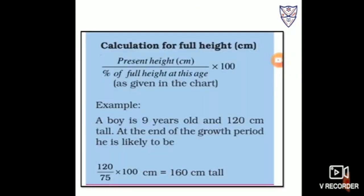Let us solve a sum using this formula. A boy is 9 years old and 120 centimeters tall. At the end of the growth period, what will be his height at age 18? Present height is 120 cm. From the table, at age 9, boys have reached 75% of their height. So: 120 divided by 75, multiplied by 100 equals 160 centimeters. At the age of 18, he will have a height of 160 centimeters.